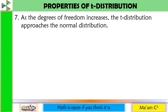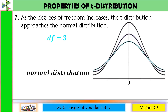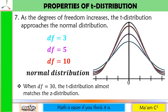Property seven: as the degrees of freedom increases, the T-distribution approaches the normal distribution. When the degrees of freedom is equal to 30, the distribution almost matches the Z-distribution. That is why, with a large sample size such as n greater than or equal to 30, we use Z-distribution. So, as degrees of freedom increases, T-distribution approaches normal distribution.